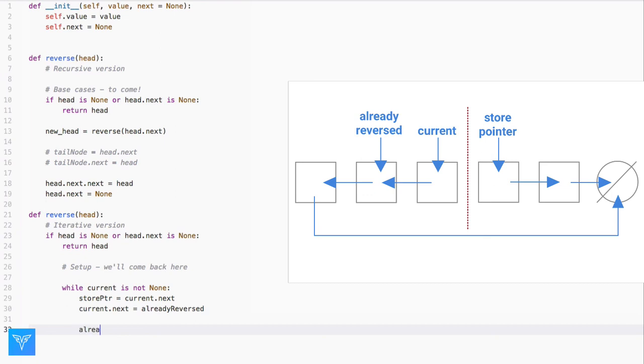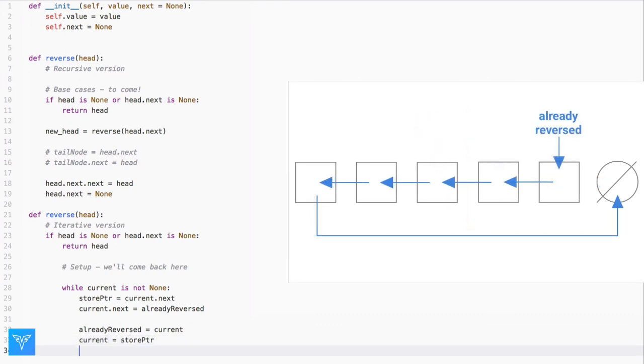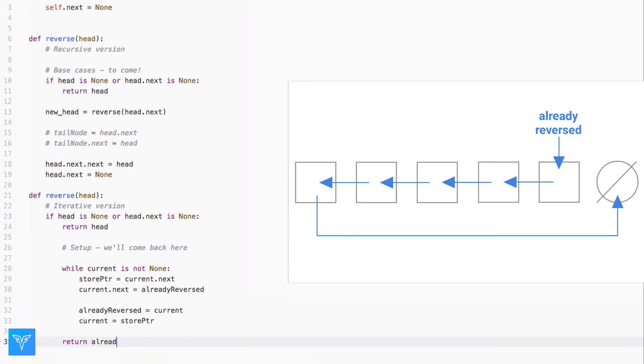Now we just have to make current point to the head of the forward list, and alreadyReversed point to the head of the reversed list. When do we stop? When current reaches none, and alreadyReversed is then the head of the linked list, which we then return.